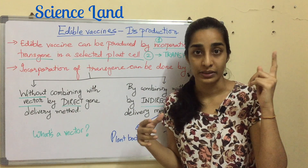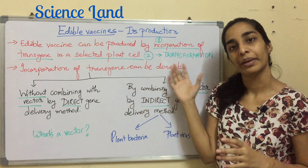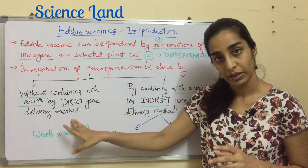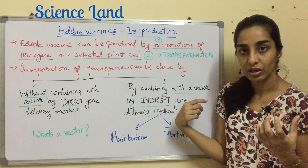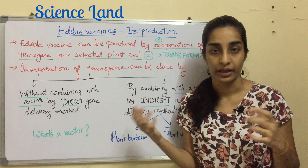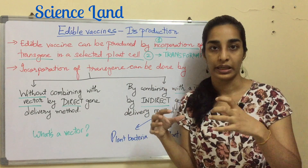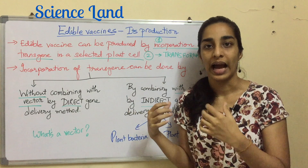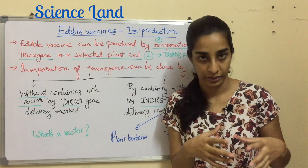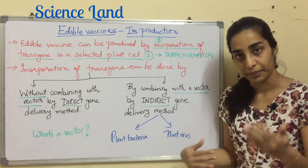Incorporation of a transgene can be done by two main methods: without combining with a vector, by the direct gene delivery method, or by combining with a vector, by the indirect gene delivery method. One uses a vector, the other doesn't. A vector is like a vehicle for your antigenic sequence — it carries the antigenic sequence from a pathogen to the plant.